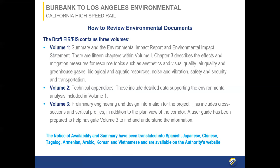Regarding how to review the documents: Volume 1 contains the summary and all chapters described. Volume 2 provides technical appendices with more detailed data supporting Volume 1. Volume 3 is all the engineering and design information, enabling you to look at design plans, rail plans, and proposed grade separations. There is a user guide for Volume 3 to help navigate it. While the entire document is not available in different languages, the summary has been translated into Spanish, Japanese, Chinese, Tagalog, Armenian, Arabic, Korean, and Vietnamese — all posted on the authority's website.